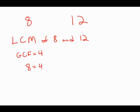8 equals 4 times 2. 12 equals 4 times 3. I've written both these numbers in the form of greatest common factor times another factor.